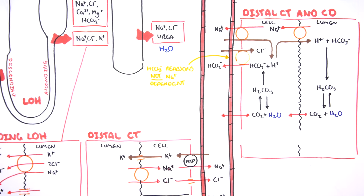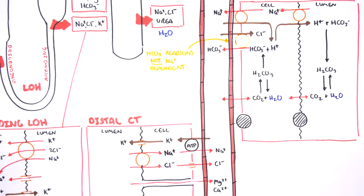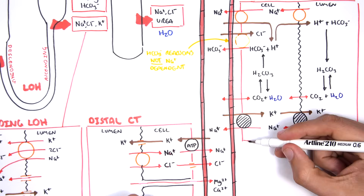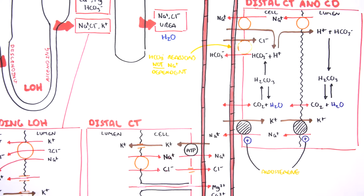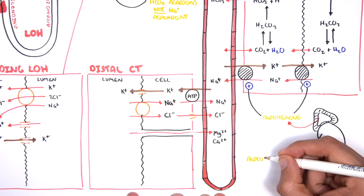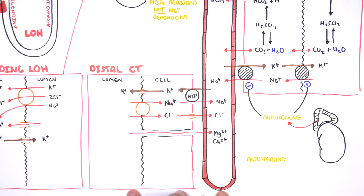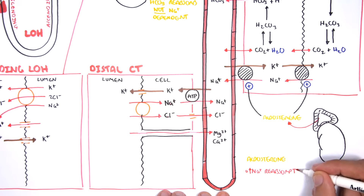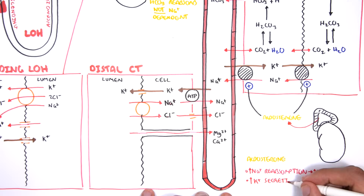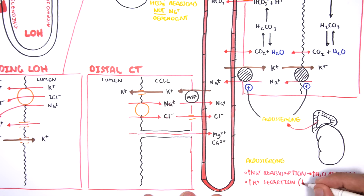Within the distal convoluted tubule and collecting duct, there are channels that exchange sodium and potassium — not necessarily ATP-dependent, but controlled by the hormone aldosterone. Aldosterone is produced and secreted by the adrenal glands, specifically the adrenal cortex, in response to low blood pressure. An increase in circulating aldosterone means more sodium will be reabsorbed, which means more water will be reabsorbed to increase blood pressure. However, this also means more potassium will be secreted, causing hypokalemia — low potassium in the blood.